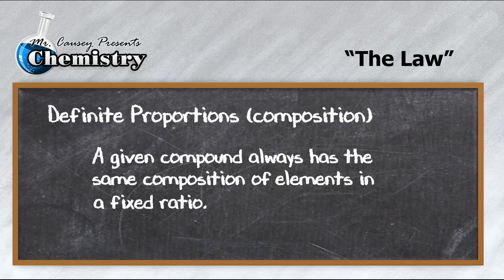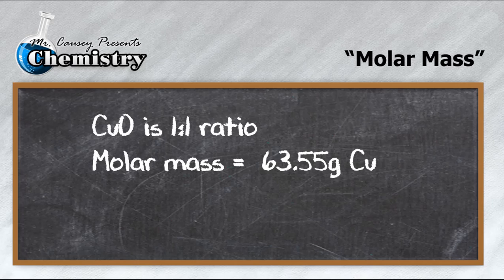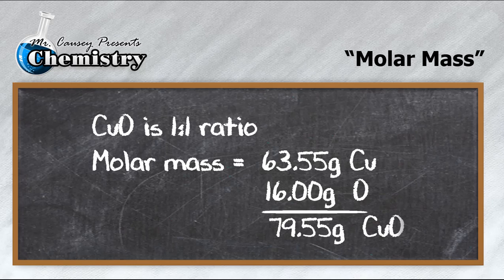Alright, so that means that we can look at the mole ratio and the mole ratio of copper 2 oxide is 1 to 1 which means that for every copper there is one oxygen. So then we can calculate the molar mass. We just have to take the molar mass of copper, add it to the molar mass of oxygen and since it's one-to-one, add them together and we have that CuO is 79.55 grams per mole.